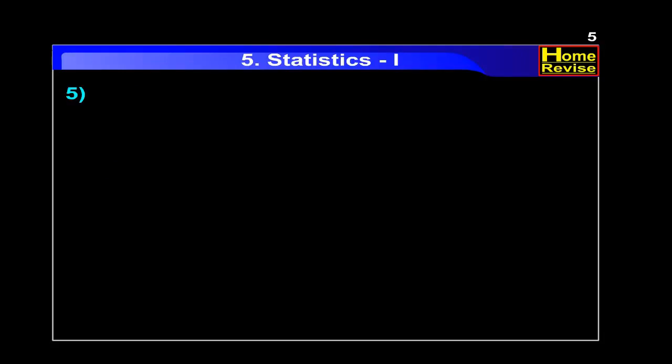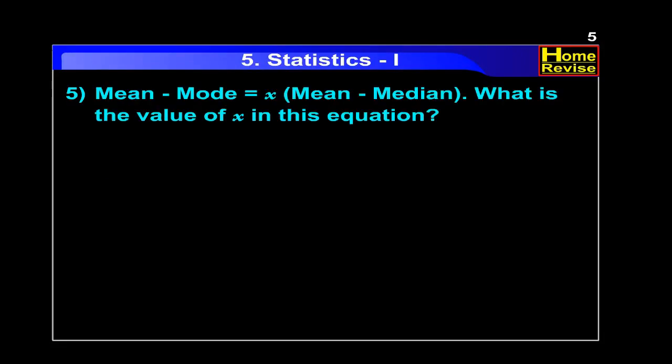Question number 5. Mean minus Mode is equal to x into (Mean minus Median). What is the value of x in this equation? The value of x is 3.